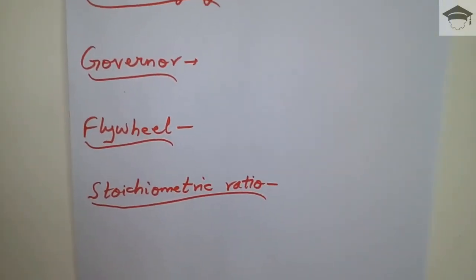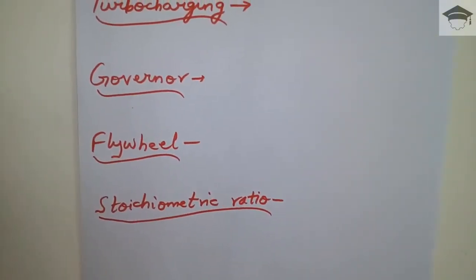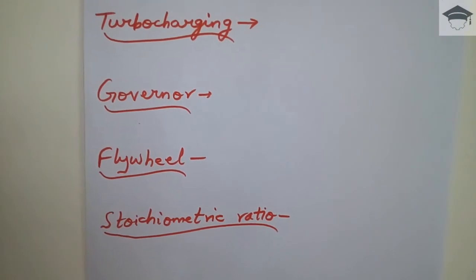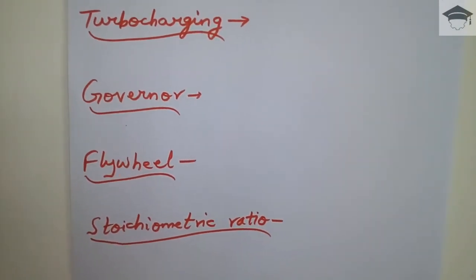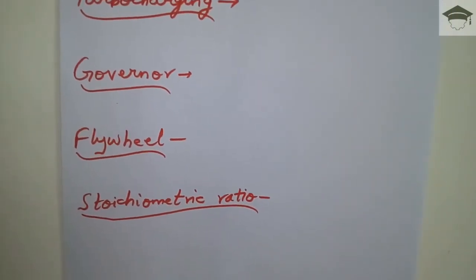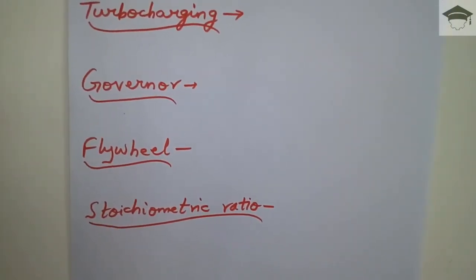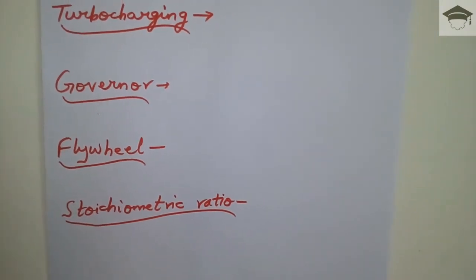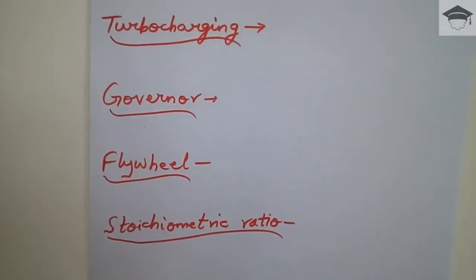Flywheel is a device used to control fluctuations due to engine turning moment in each cycle of operation. The flywheel stores energy and releases it.